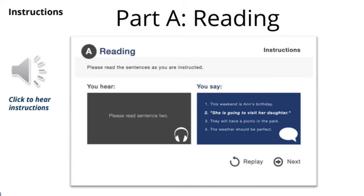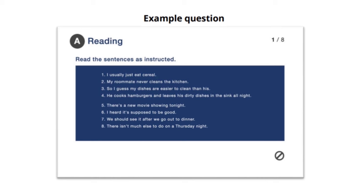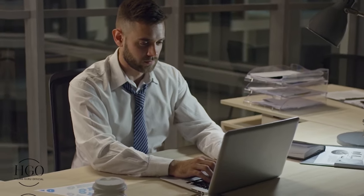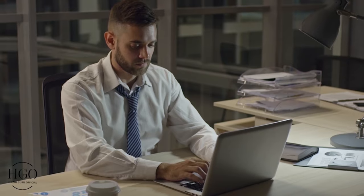Let's move on to our first section, Part A, which is for reading. In this section you will see eight sentences on your screen and an automated machine — or bot — will ask you to read sentences randomly. For example, the bot will say 'please read sentence number four' and you will read sentence four displayed on your screen. Then the bot will say 'now read sentence number seven' and you will proceed with sentence seven, and so on. The bot will ask you to randomly read sentences. Trust me, this is the easiest section of this test and you should aim to score as high as possible in this section.